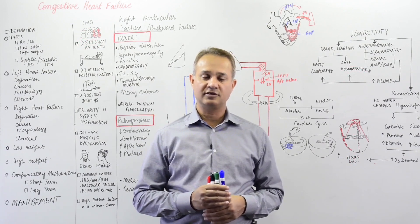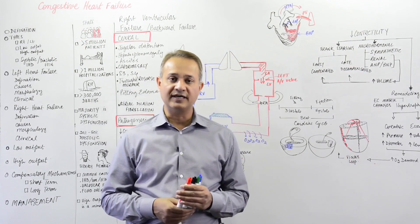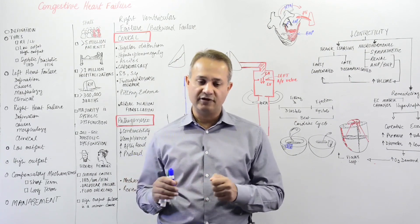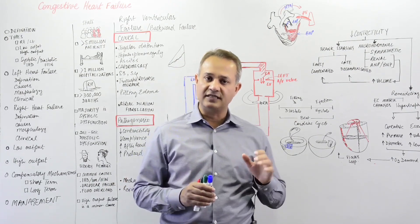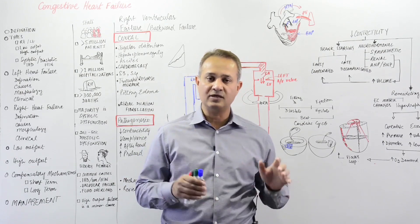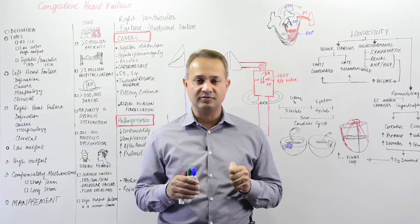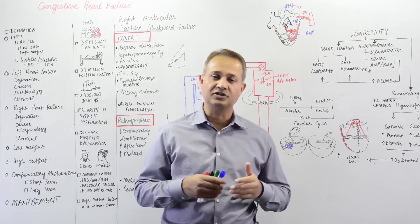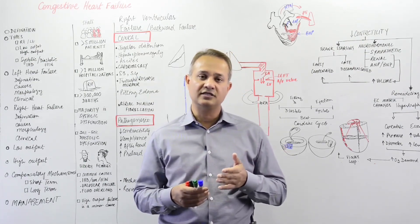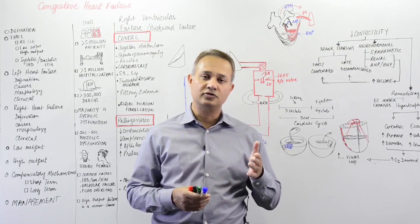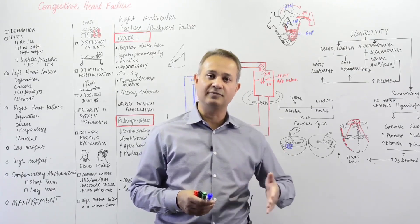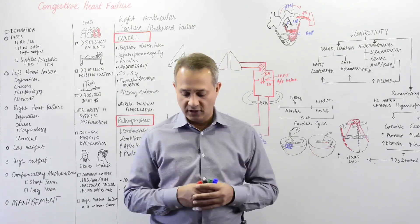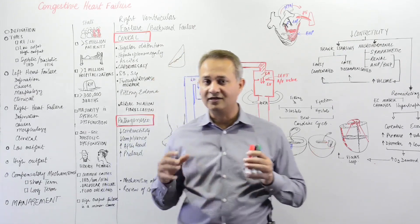Continuing with cardiovascular system pathology, this lecture is about right heart failure. We've already covered left heart failure. Right heart failure is less common compared to the left heart, but when present it is a serious condition because the tissue that normally causes it is the lungs — pulmonary hypertension — and it is usually difficult to treat or reverse if the damage has been done, for example in a long-term smoker.